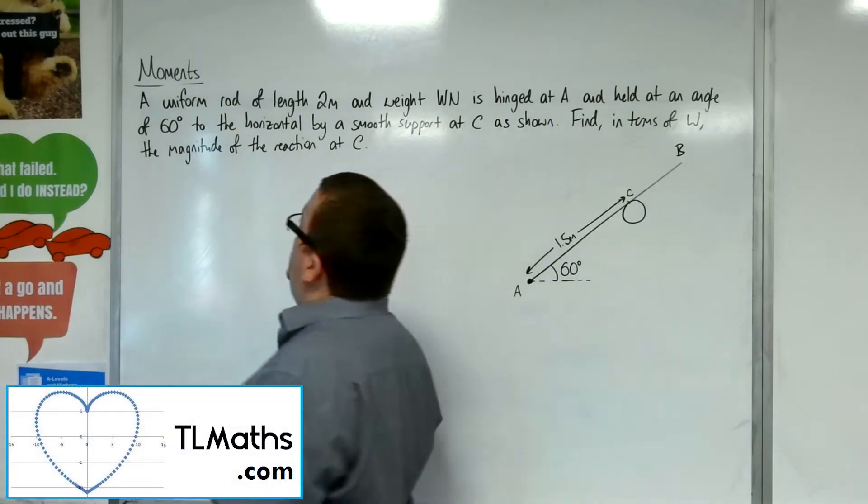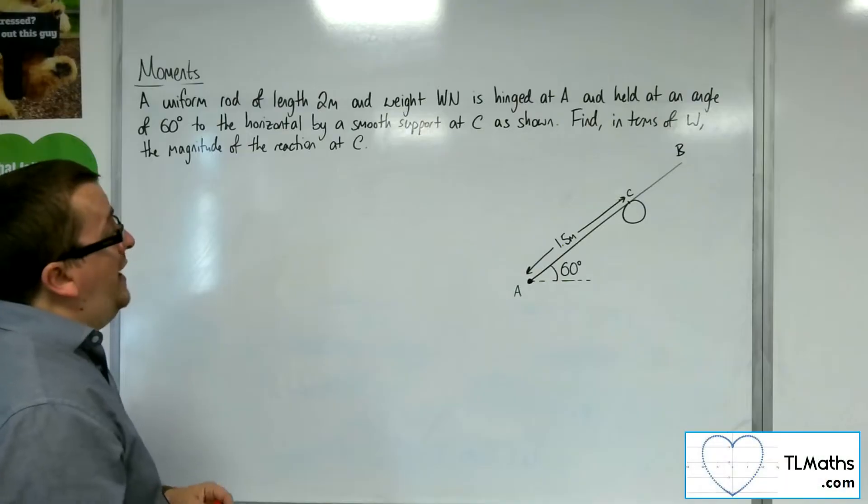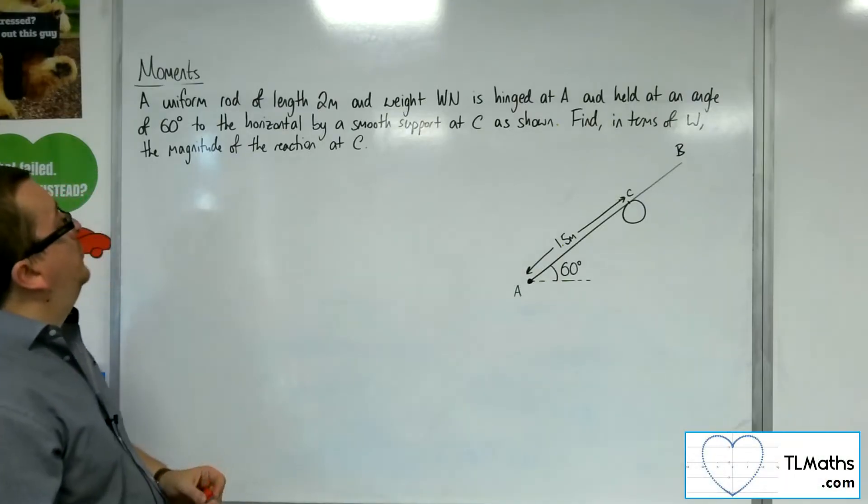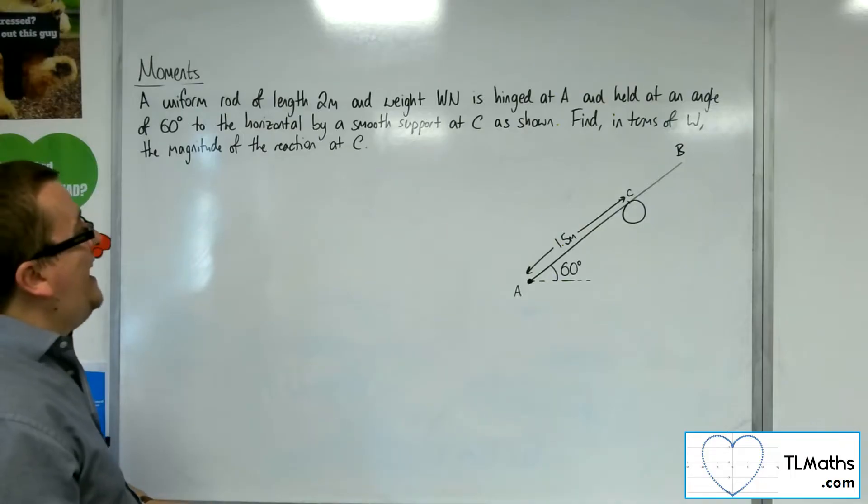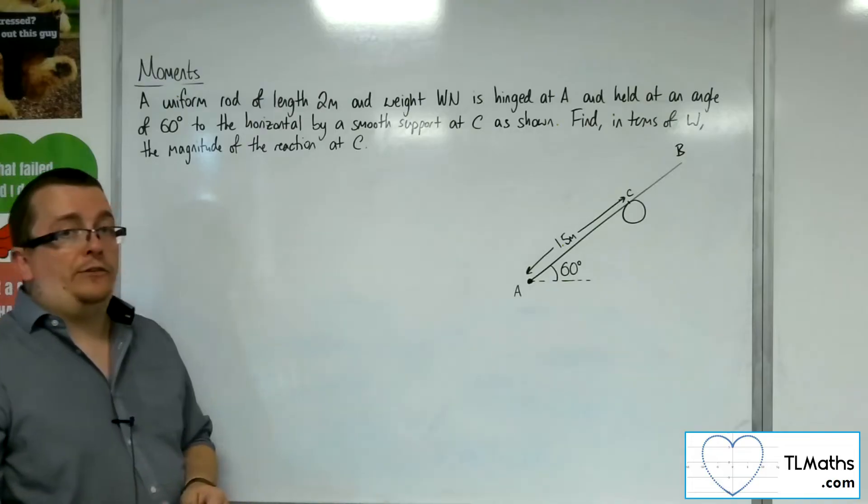OK, in this video, a uniform rod of length 2 metres and weight W newtons is hinged at A and held at an angle of 60 degrees to the horizontal by a smooth support at C as shown. Find in terms of W the magnitude of the reaction at C.